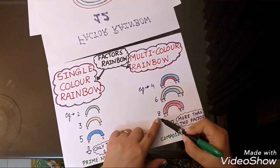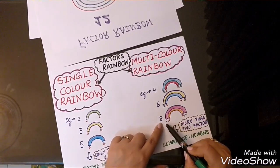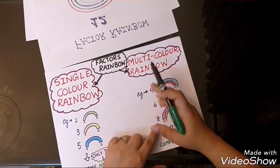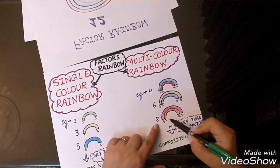Next, let's take the example of 8. 1, 2, 4 and 8 are the factors of 8. So, there are many factors of these numbers.